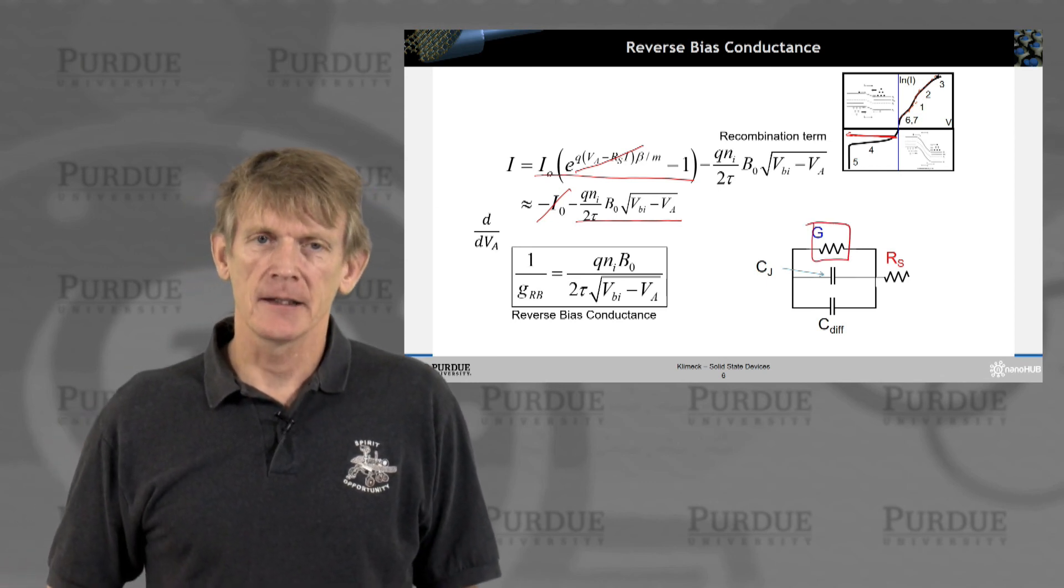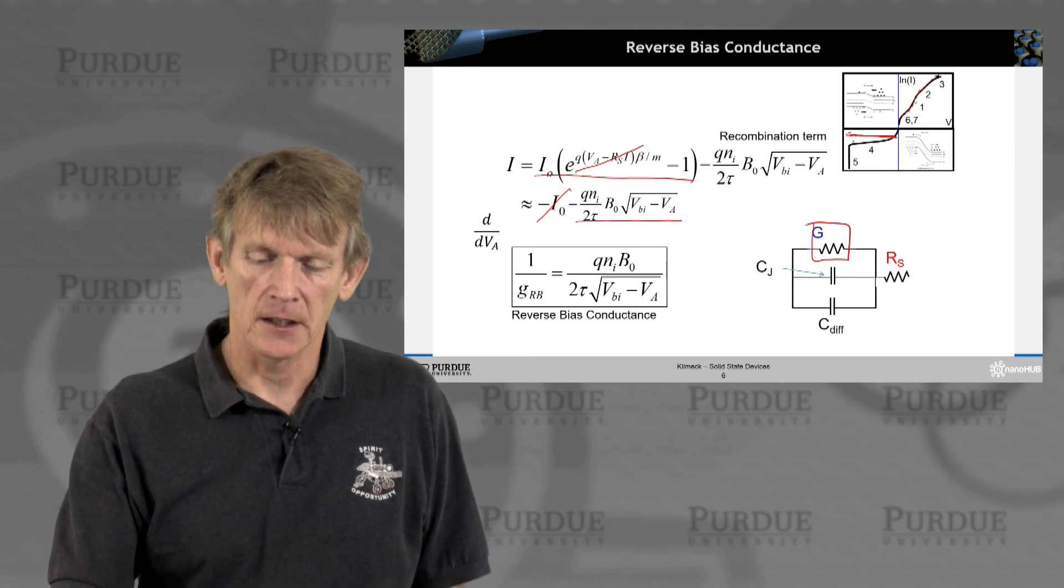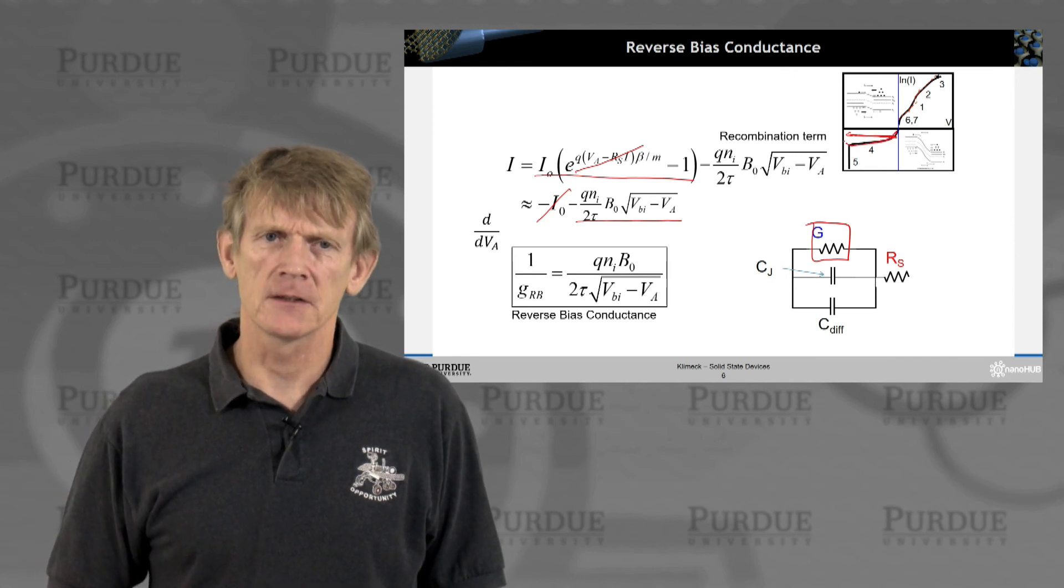We have now a reverse bias conductance, this guy here, that is again depending on the bias you have applied. It's a nonlinear element, and you can kind of see that here. This is not a simple resistor, obviously.